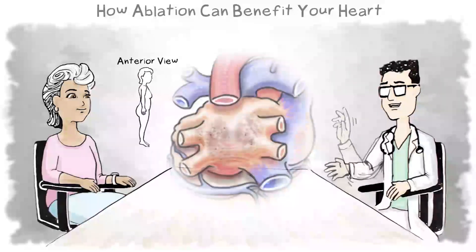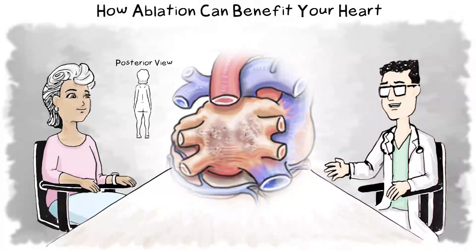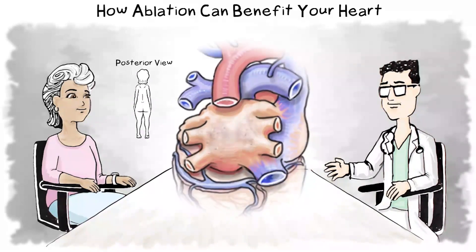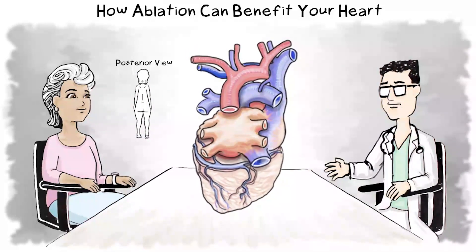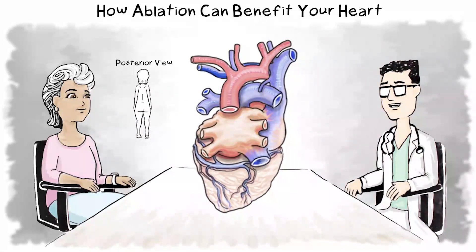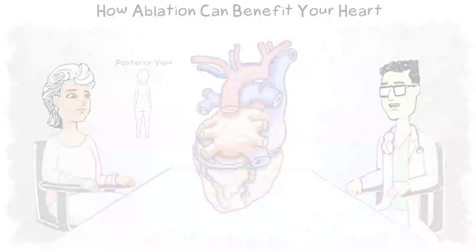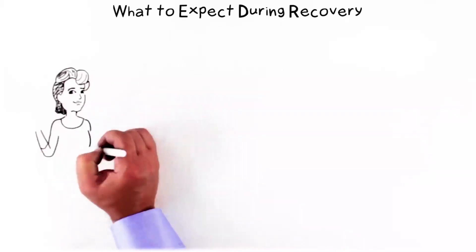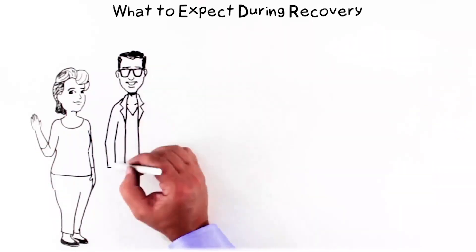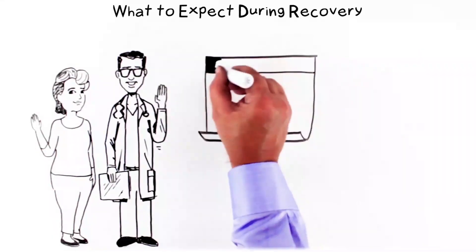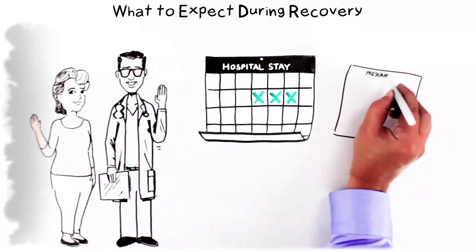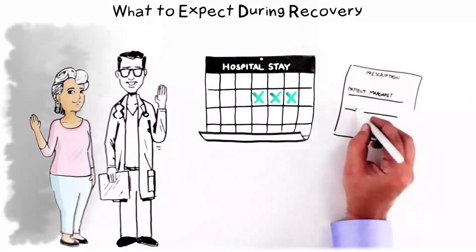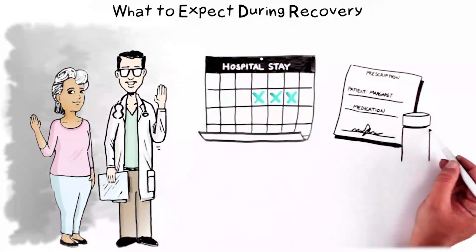When atrial fibrillation is successfully treated, it can reverse the stretching of the left atrium and improve symptoms, meaning fewer heart medications are needed. Talk to your healthcare professional to learn more about the best atrial fibrillation treatment for you. After hybrid atrial fibrillation therapy, the hospital stay will typically be two to three days. Your doctor will provide medication to prevent inflammation, and you can resume taking needed heart medications as directed.